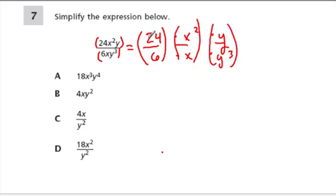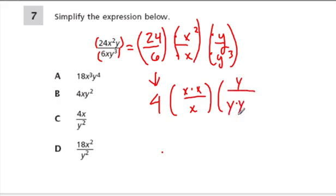And this allows me to do some major reduction. 24 divided by 6 is what? That's 4. x squared divided by x, what's that? Well, let's expand it just to look at it. Looks like this. And then y over y cubed, that's just y over y times y times y. What can we do with this?